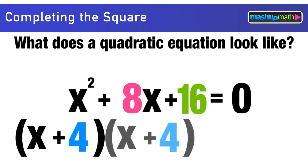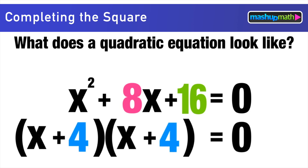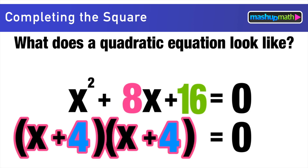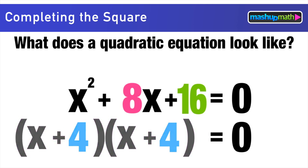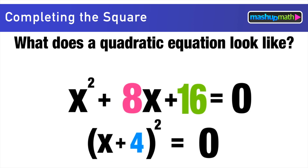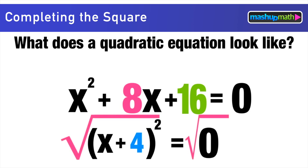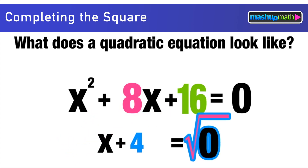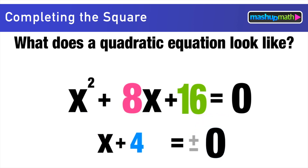This one is easily factored to (x+4)(x+4), since 4+4=8 and 4×4=16. We can rewrite (x+4)(x+4) as (x+4)² = 0. To get rid of that exponent, we take the square root of both sides, which cancels out the square on the left side.